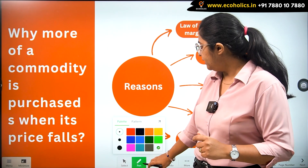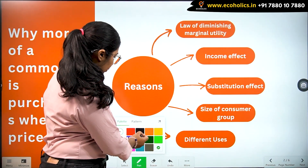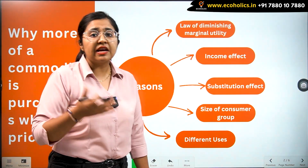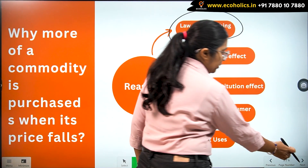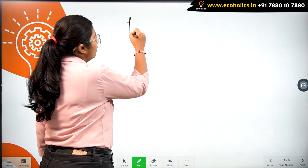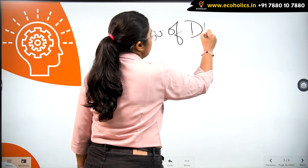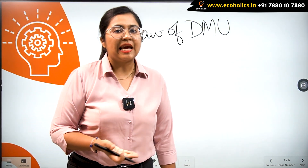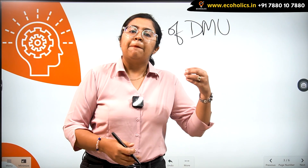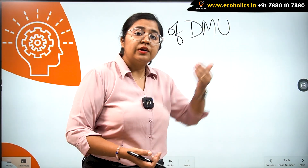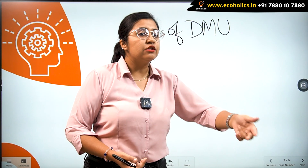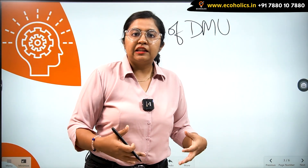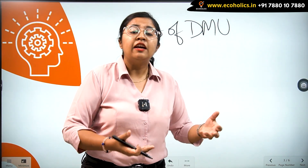Now, to understand why more of a commodity is purchased when its price falls, we have certain factors to address one by one. The very first reason is the law of diminishing marginal utility, also called the law of DMU. This law conceptualizes the idea that the utility — the satisfaction gained from consuming commodities — by a consumer gradually declines as more and more units are consumed.